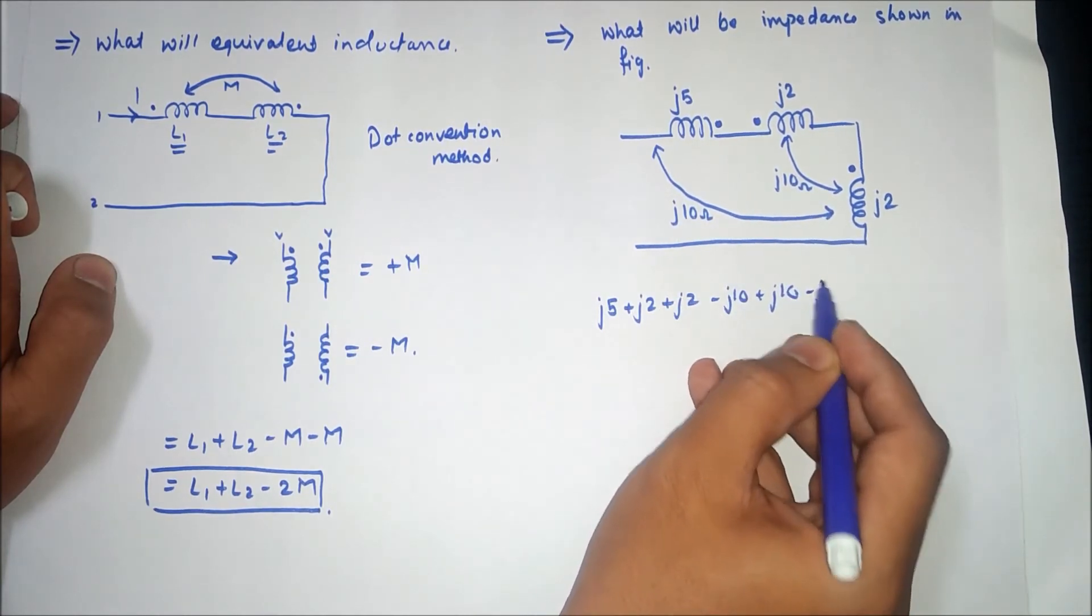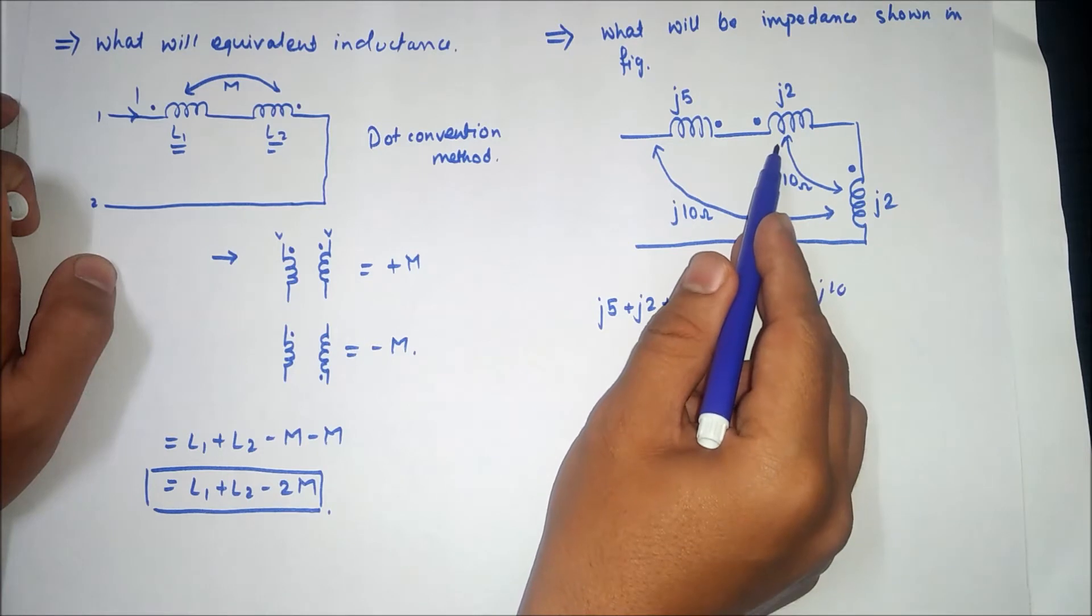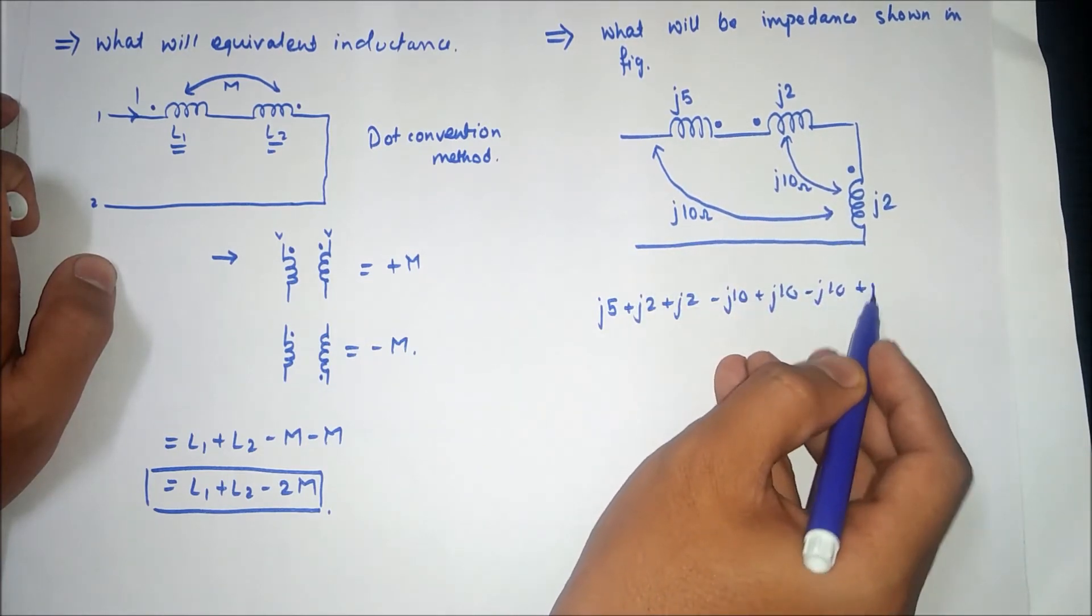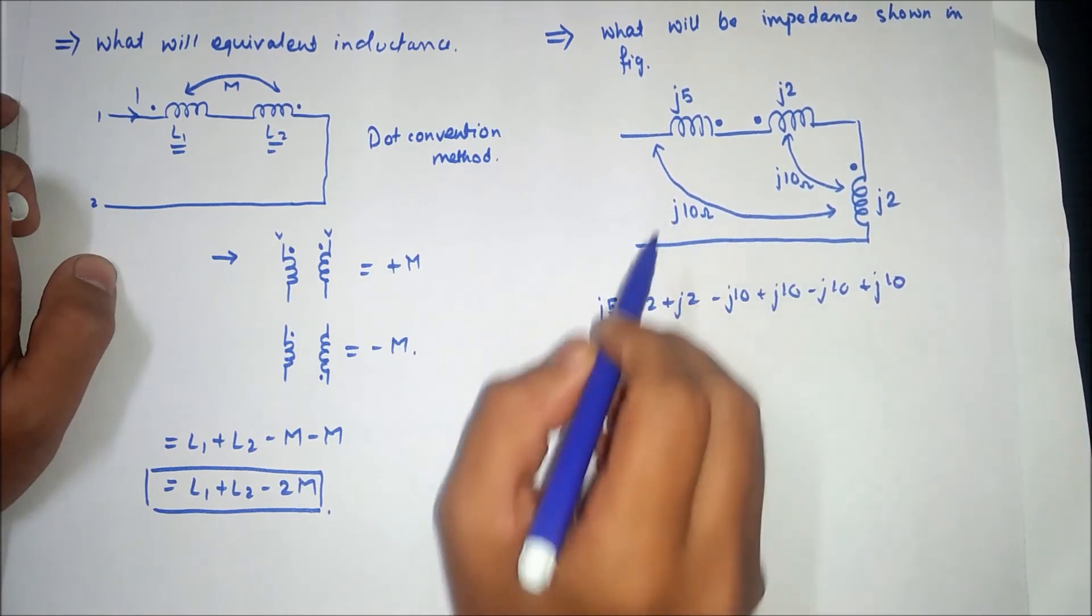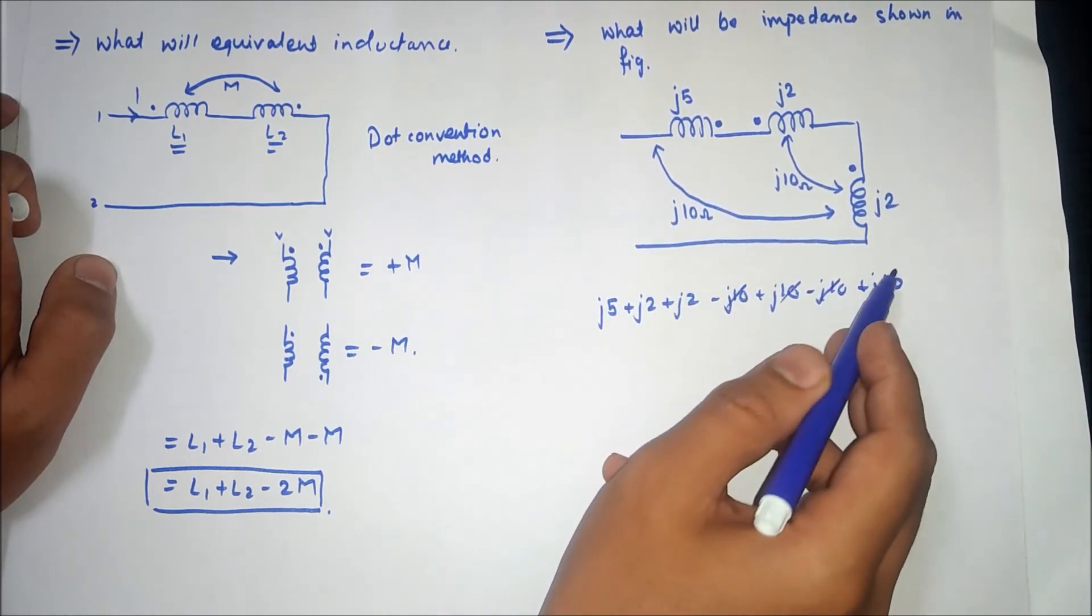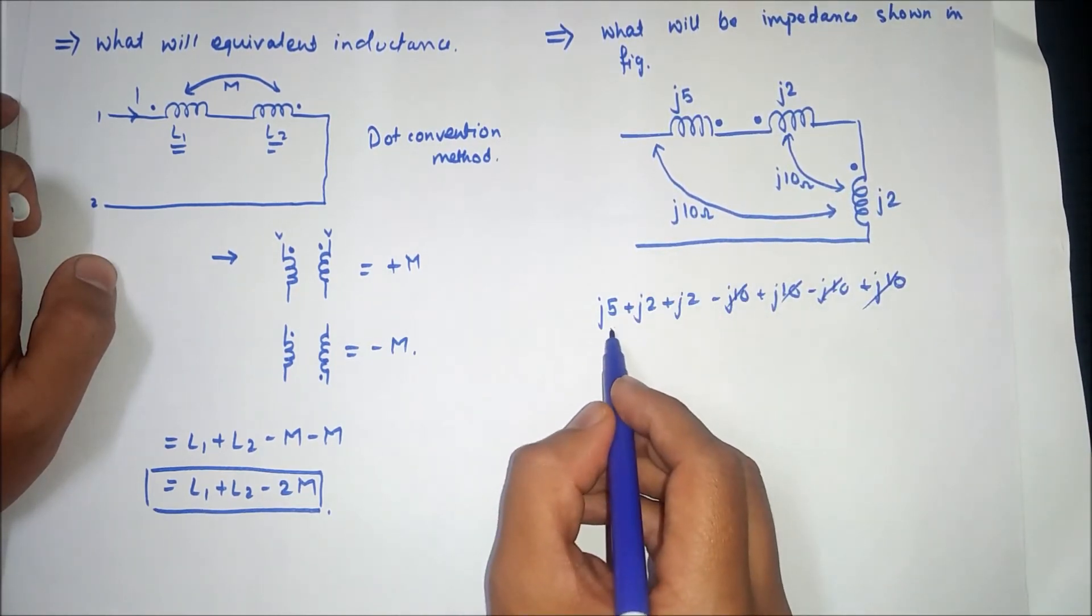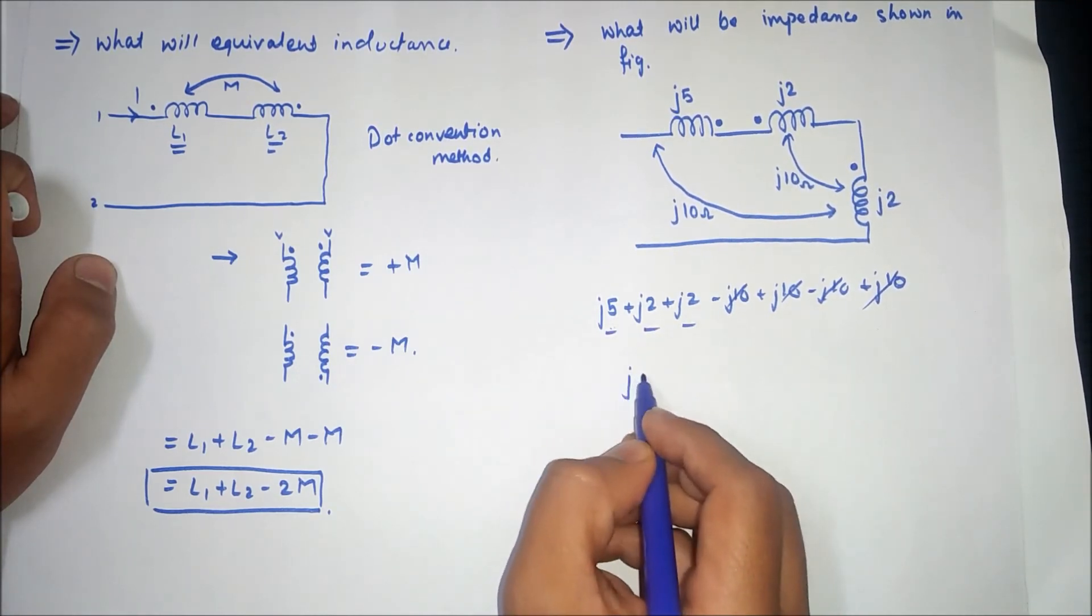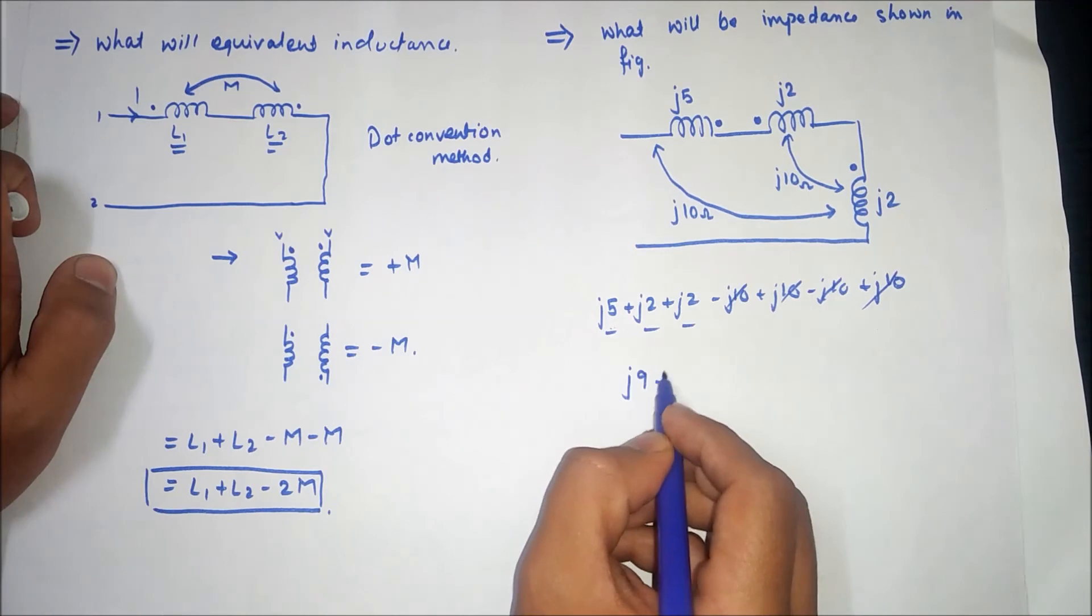J10 and here current entering, so positive J10. So these all are cancelled, so remaining is J5, J2 plus J2. So our answer will be J9 ohm.